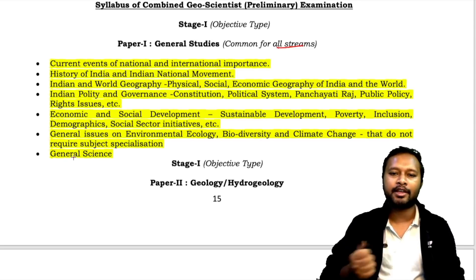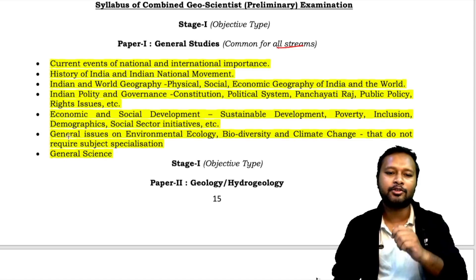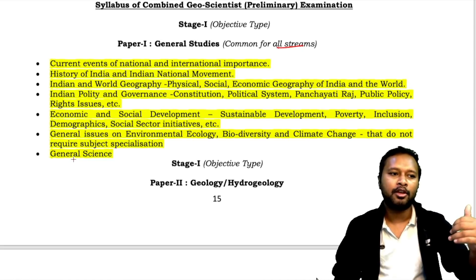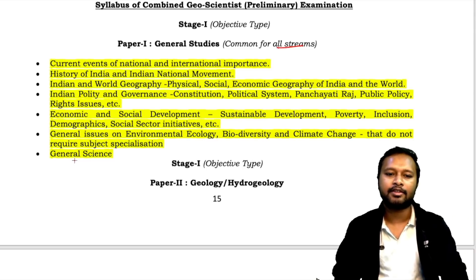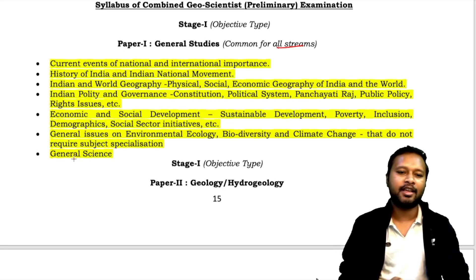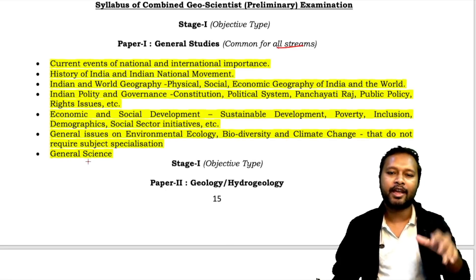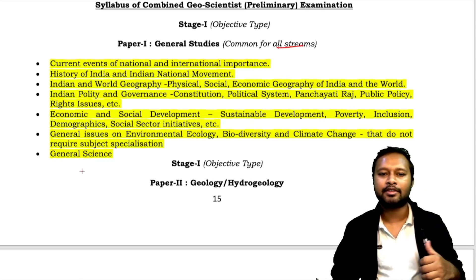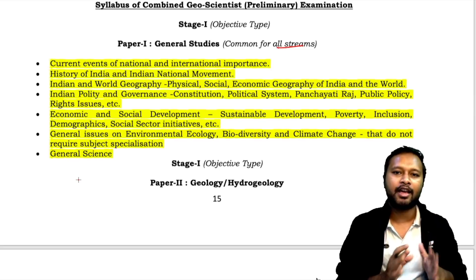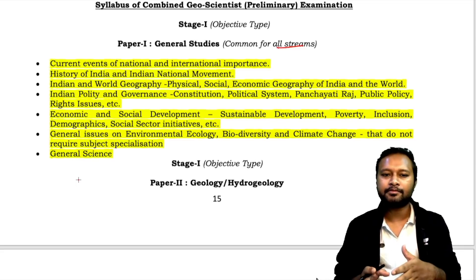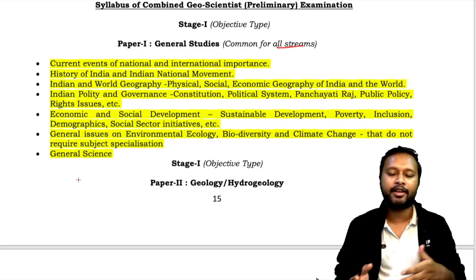For general science, if you are a science student you can answer those questions without any special preparation — things like how light passes through a prism, what the wavelengths are, or why the sky appears red at sunset. So don't give special attention to general science. What you should focus more on is history, polity, and geography. Reading books will take too much time — following videos is a far more time-efficient way to understand these things.